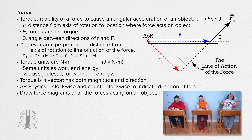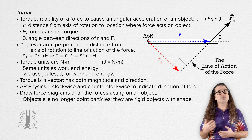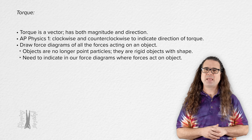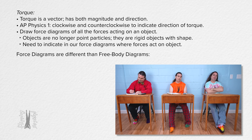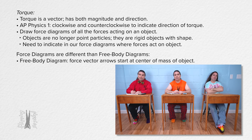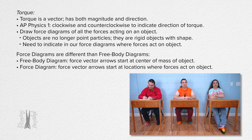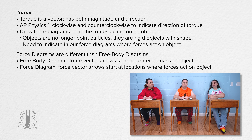When working with torque, we draw force diagrams of all the forces acting on an object. The objects are no longer point particles — they are rigid objects with shape. This means we need to indicate in our force diagrams where the forces act on the object. Bobby, how are force diagrams different than free body diagrams? In a free body diagram, all force vectors start at the center of mass of the object. In a force diagram, all force vector arrows start at the locations where the forces act on the object. This is because for torque, it matters where the forces act — the same force acting at a different location on the same object can cause a different torque.